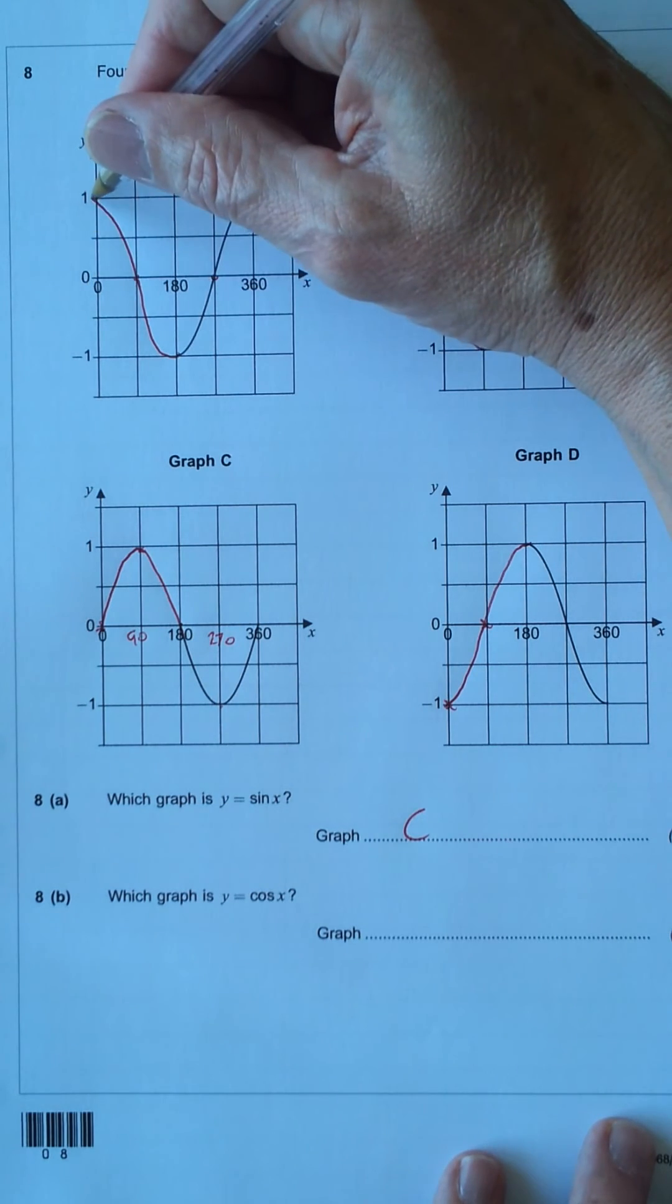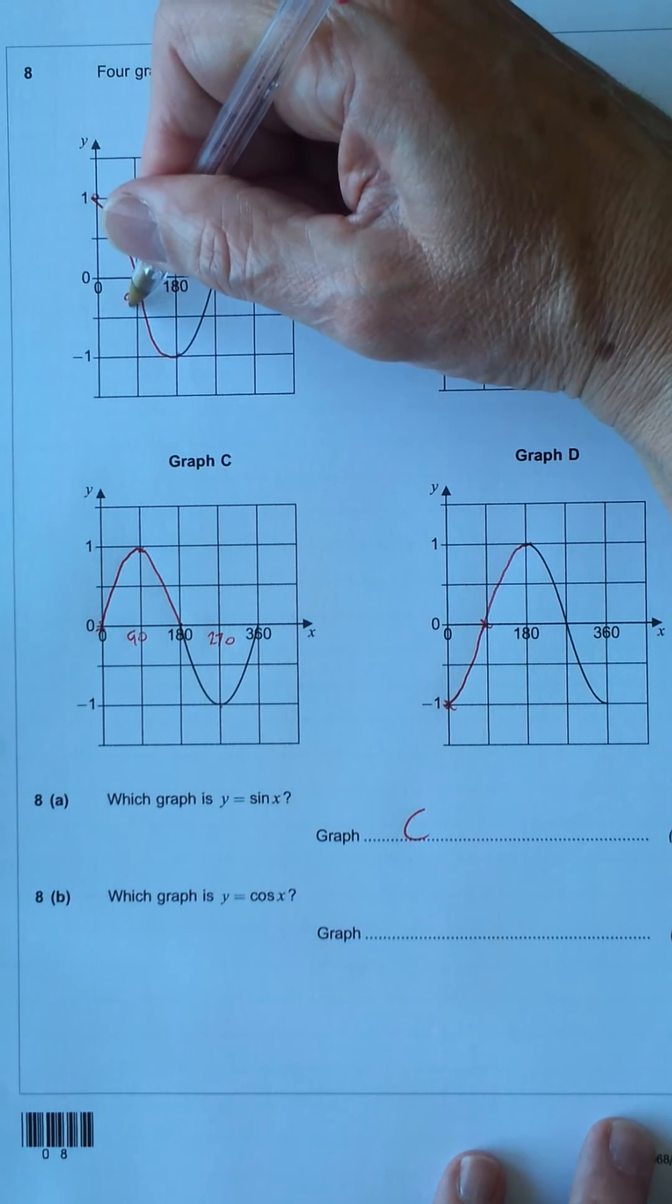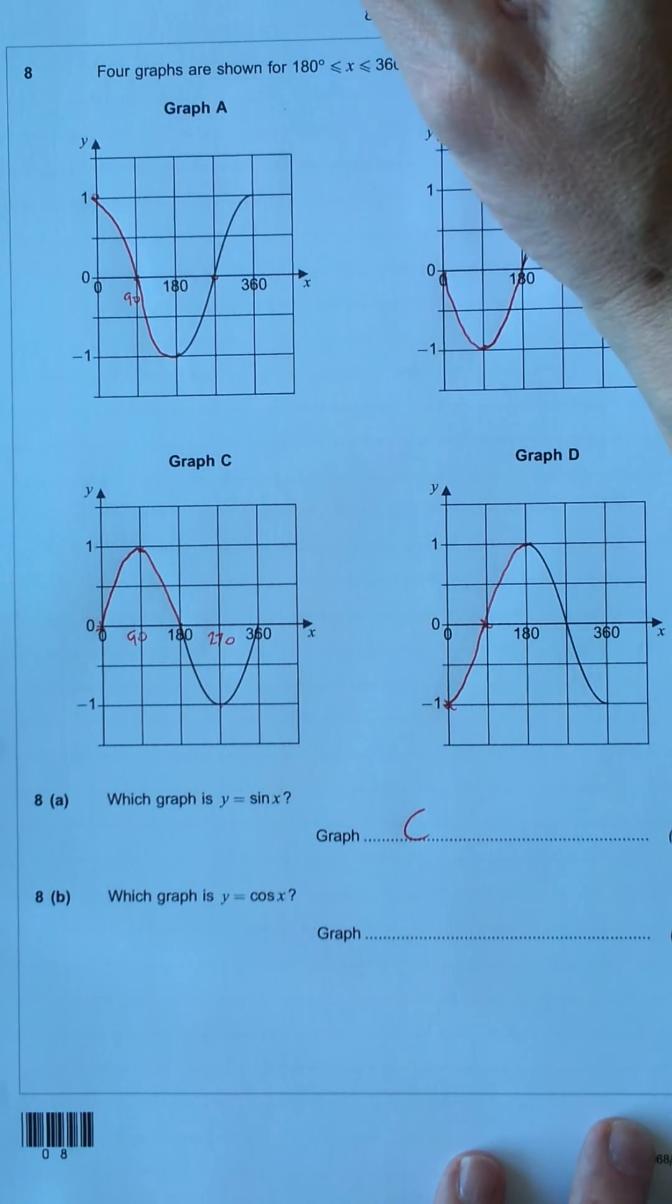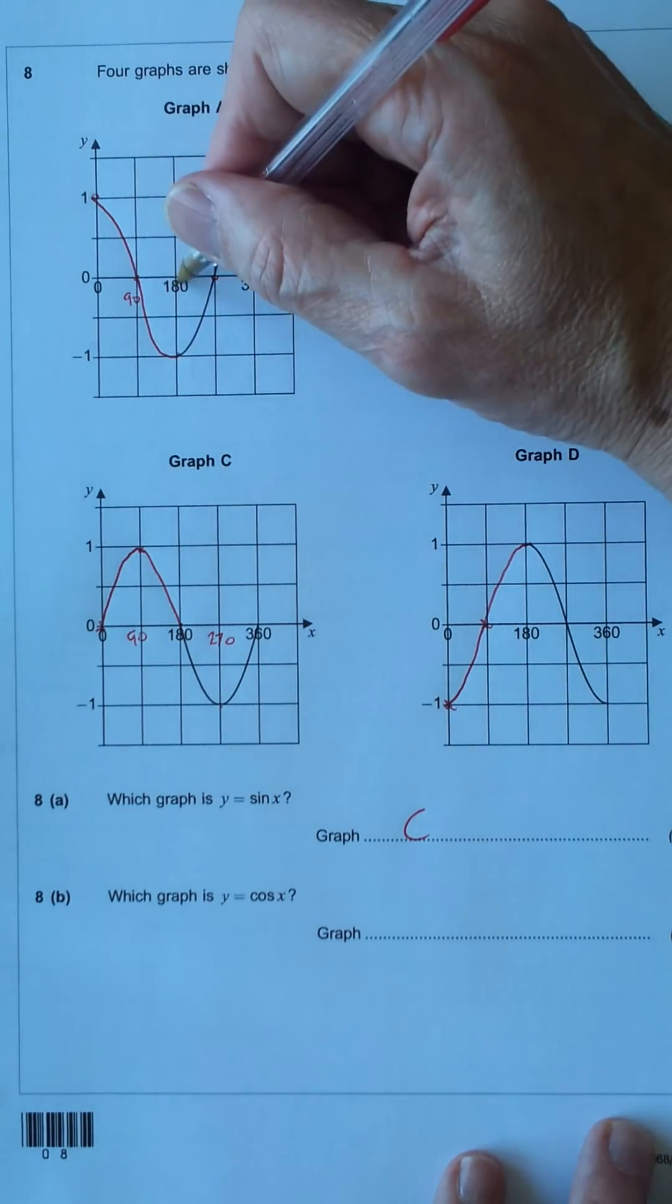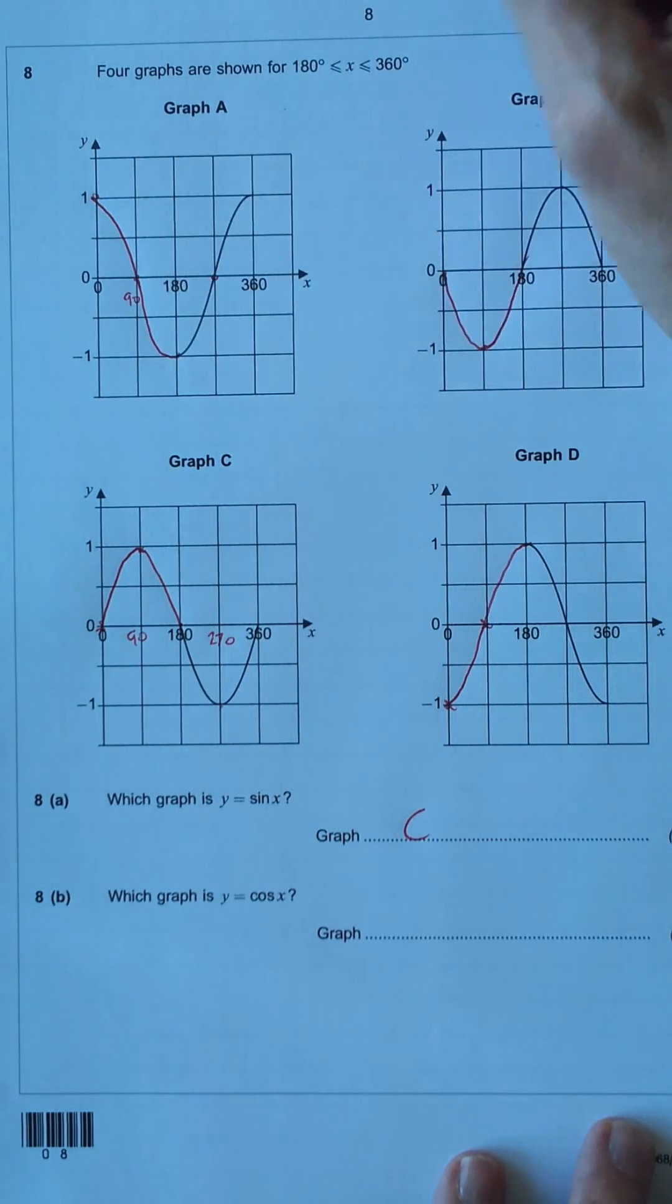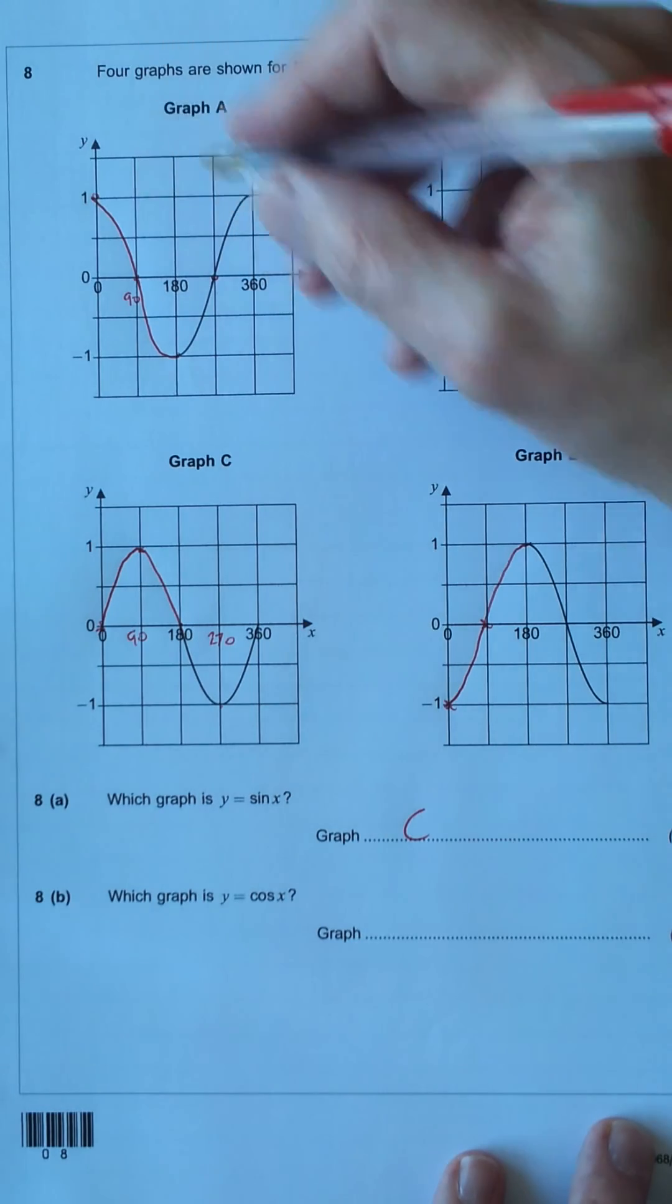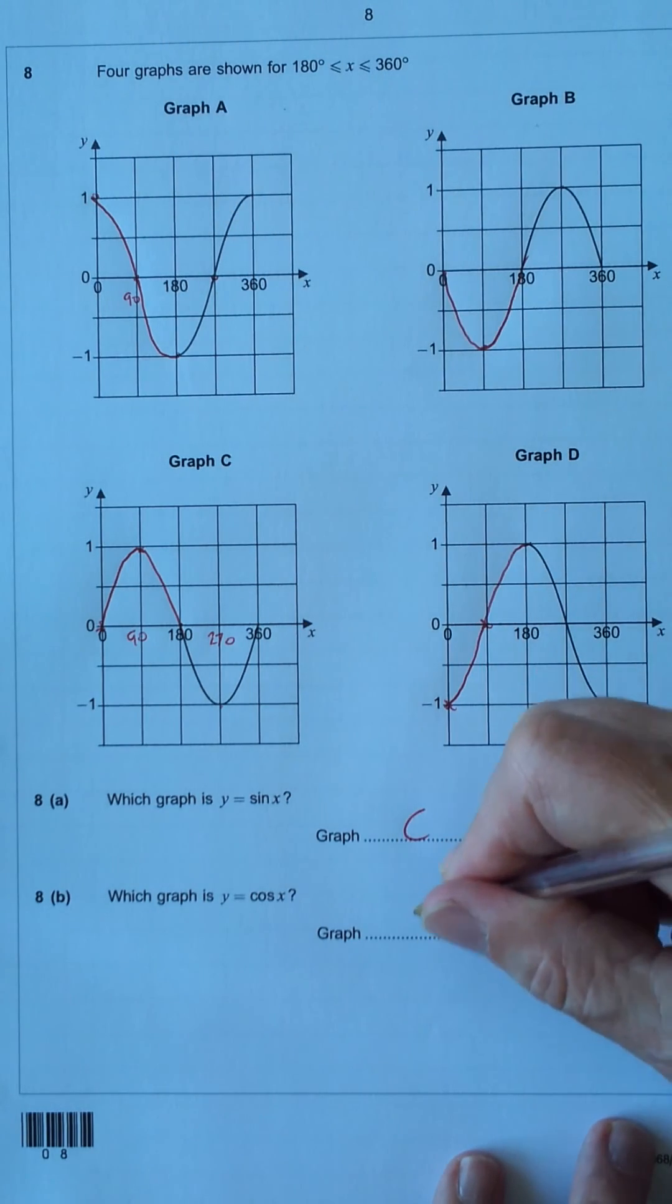At x equals 0, y is 1. At 90 degrees, x is 0. Sorry. At x is 90 degrees, y is 0. At x is 180, y is minus 1. And so on. So, that one is A.